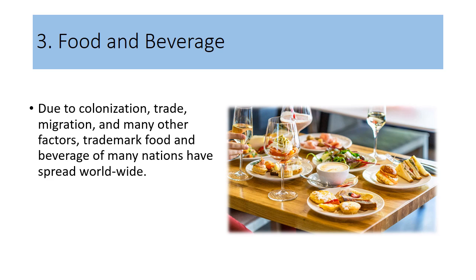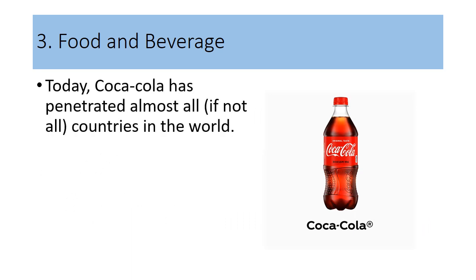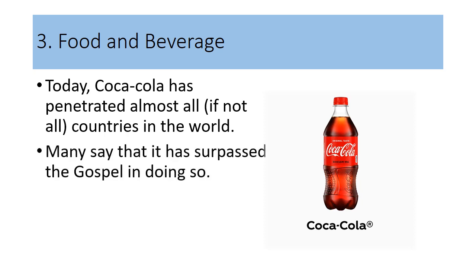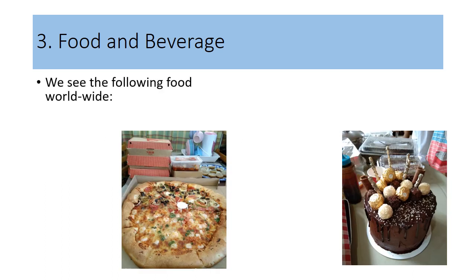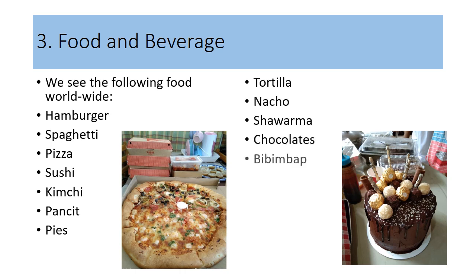Due to colonization, trade, migration, and many other factors, food and beverages have also spread worldwide. Today, Coca-Cola has almost penetrated all countries in the world, and many say that it has surpassed the gospel. We see the following worldwide foods available to humanity: hamburger, spaghetti, pizza, sushi, kimchi, pansit, pies, tortilla, nachos, shawarma, chocolates, and bibimbap.